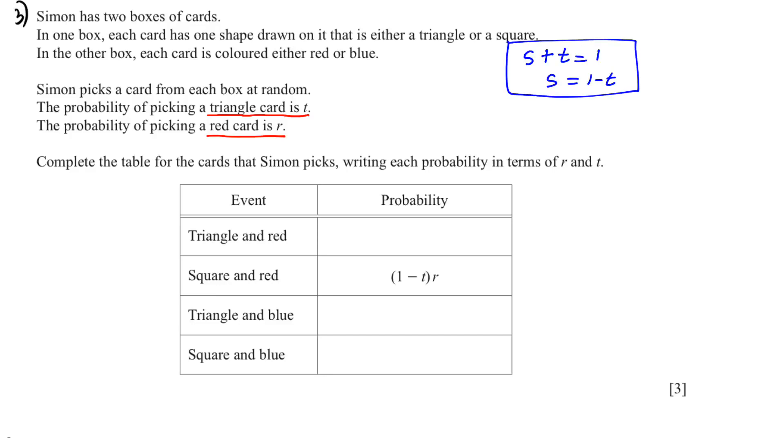And probability of the red card plus blue card is 1. So the probability of blue will be 1 minus r. Therefore the probability of triangle and red will be tr.